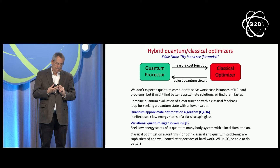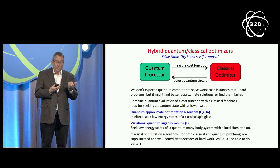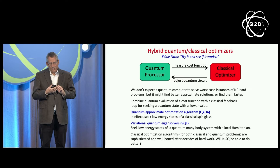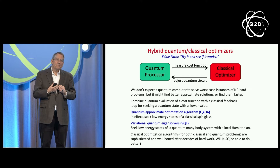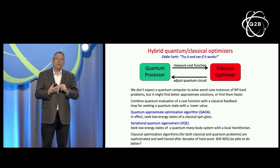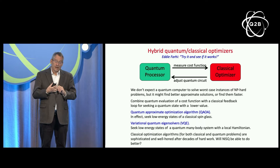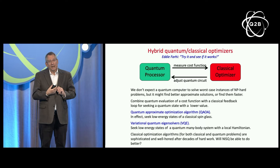We don't really expect quantum computers to give us exact solutions in polynomial time to hard instances of NP-hard problems, but they might produce better approximate solutions or find them faster. When applied to classical optimization problems, we call this QAOA — the quantum approximate optimization algorithm. It can also be applied to problems that physicists and chemists care about, namely finding properties of low-energy states of quantum many-body systems. Whether these hybrid schemes yield speed-ups relative to the best classical methods is genuinely unknown — we have to try and see, since classical methods are well-honed after decades of development.